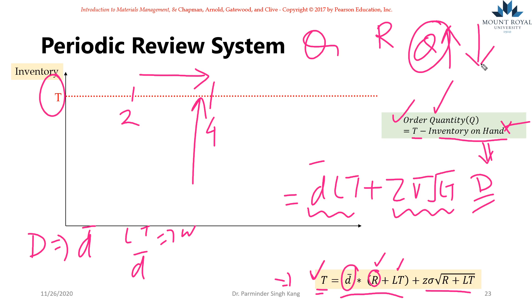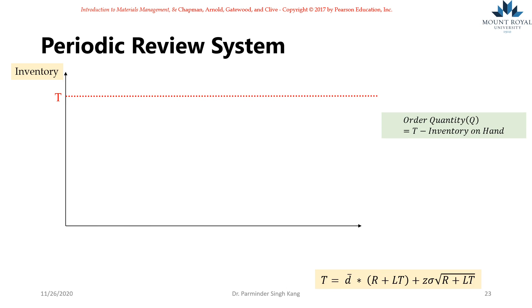Let's look at the example. We start at timeline zero, with review period R equal to 10 periods and lead time equal to two periods.